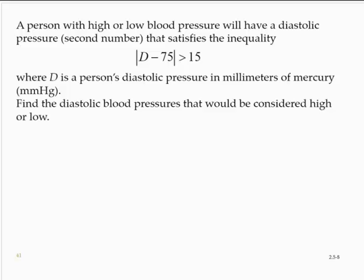So let's find those diastolic pressures by solving the inequality. So we have absolute value of d minus 75 is greater than 15. So that implies that d minus 75 is less than negative 15, or d minus 75 is greater than 15.